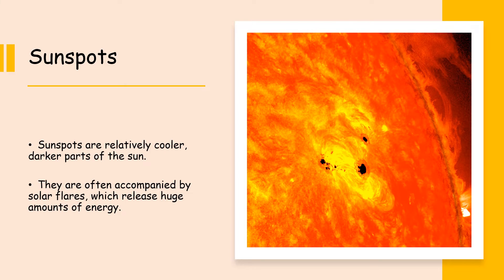The next cause is sunspots — relatively cooler, darker parts of the sun. These parts are sunspots, and fairly obviously that's why they're called that. They are slightly cooler than the surrounding parts of the sun — still very hot, but much cooler in comparison. However, they are often accompanied with solar flares, which release huge amounts of energy. So even though those areas themselves may emit less energy because they are cooler, solar flares blast huge amounts of energy towards our planet and can interfere with satellites and other things.